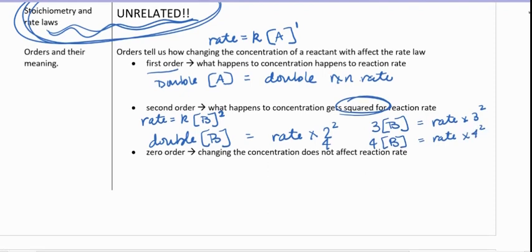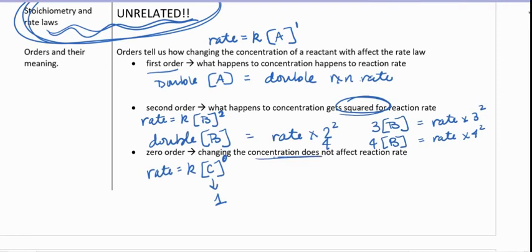There is also a zero order, meaning the rate is equal to some constant times the concentration raised to the power of zero. Remember that anything raised to the power of zero is one, so it doesn't matter what we do to the concentration — raising it to zero doesn't affect the rate. Changing the concentration of this reactant does not affect the rate at all.